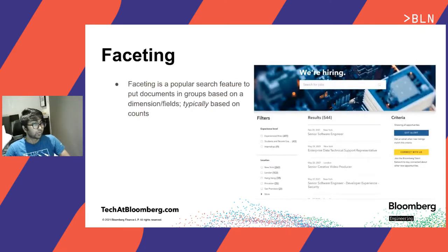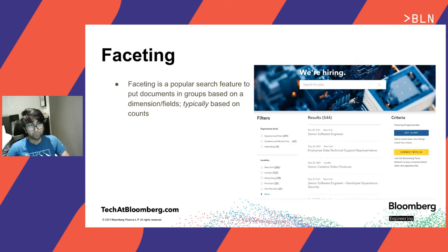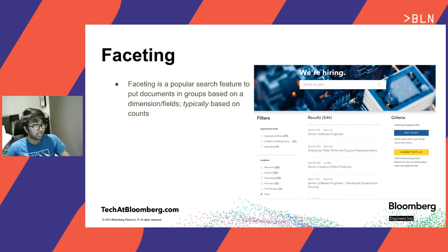This talk is about scaling facets, so it's really important to understand what faceting is. Faceting is a popular search feature which most modern search engines provide. It allows you to group your search results based on certain dimensions or fields of the result. You can see a job search page here which has a list of all jobs available at Bloomberg — around 544 results in total. By the way, we are actively hiring in my team.